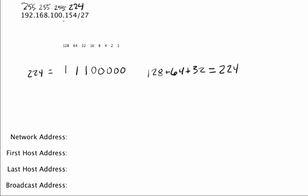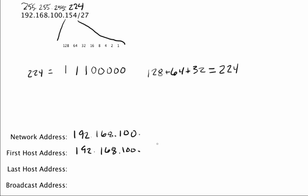Our mask is 224. Down here we are going to focus just on this last octet. These three bits are all network bits — nothing is going to change with those. So we can write in 192.168.100, because we know those bits can't change. Even for our first address, it's the same 192.168.100.something. Because those are 255s on top and those network bits are locked in, everything starts with 192.168.100. What we're going to do is take this 224 and this 154 and work out that last byte.